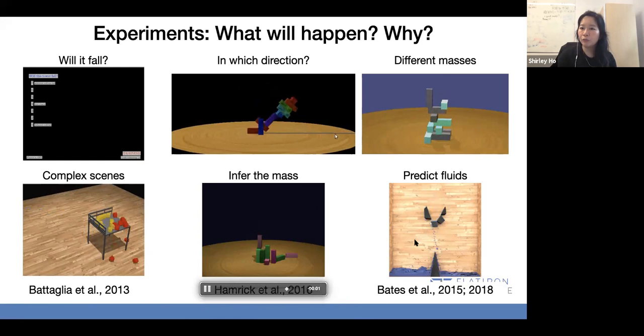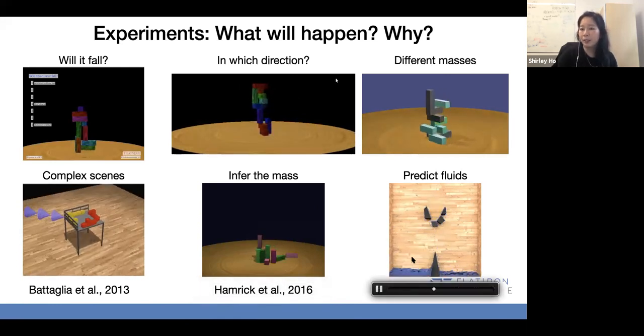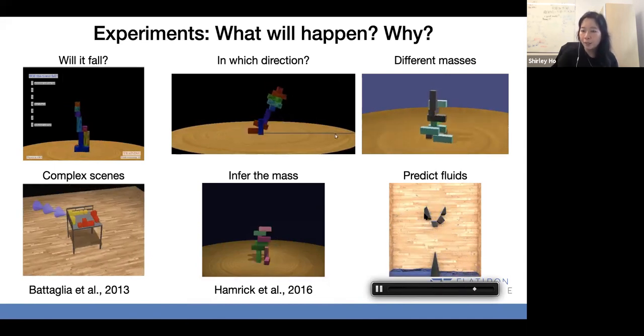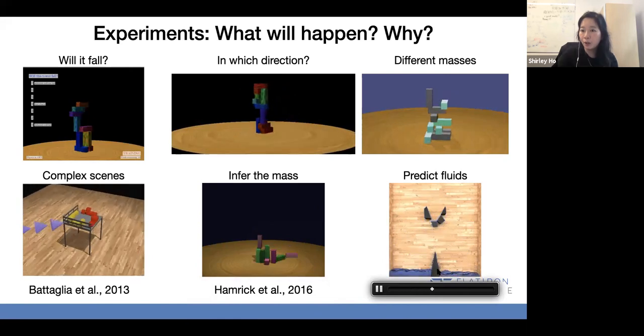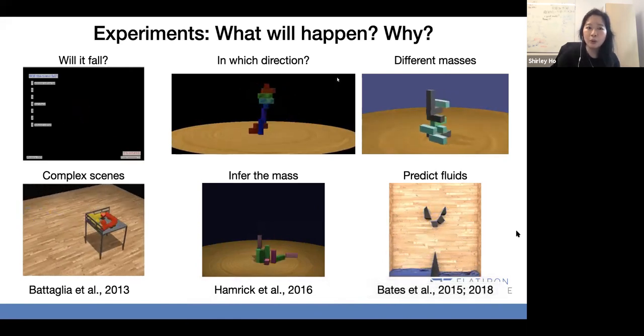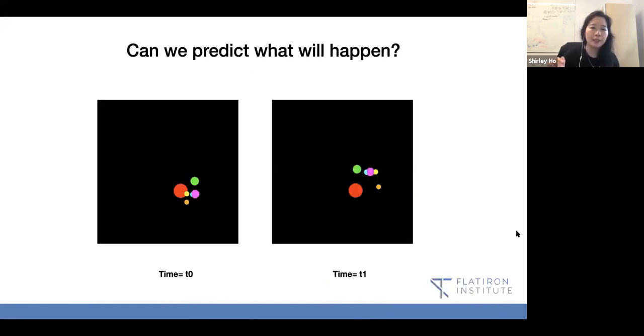As a particular astrophysicist, we do a lot of these every day. We ask ourselves, can we predict what will happen? For example, at T equals T zero, things move forward a tiny bit. We predict the next step of these planets moving around this star, their sun.